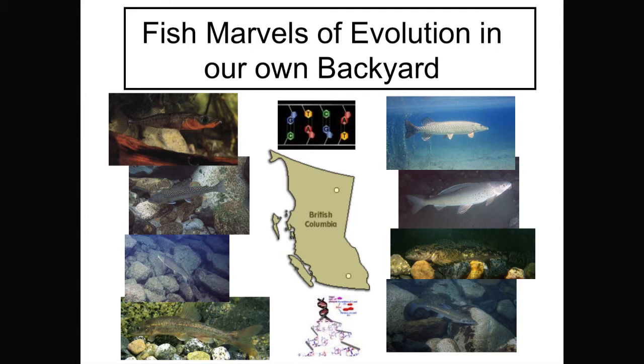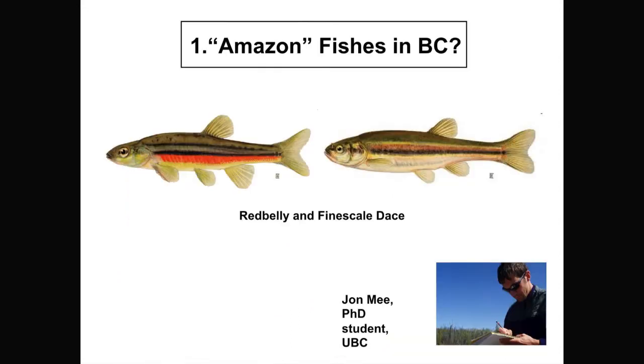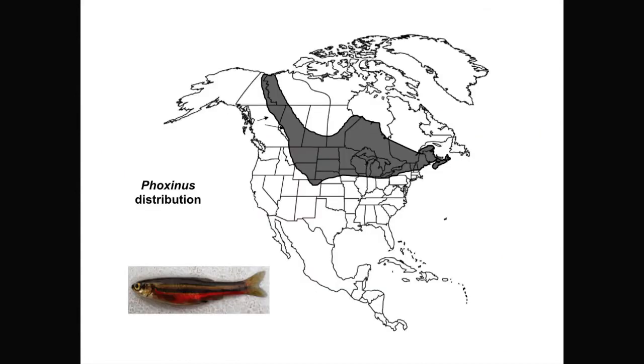And so now, I'm going to home in a bit more and give you two examples of fish that are really cool in British Columbia. And I've entitled this part, Evolutionary Marvels in Our Own Backyard. The first one involves these Amazon fishes. Amazon, note, are in quotation marks. This is work done by a former PhD student of mine, John Mee, the Red Belly and Fine Scaled Dace. Now, these fish are really weird. Here's the distribution of the two species. So, again, we're here. And they just get into the northeastern British Columbia. The distribution isn't terribly interesting. What is amazing about them is that they coexist with, here's the one species, here's the other.